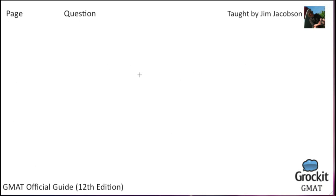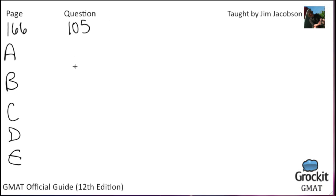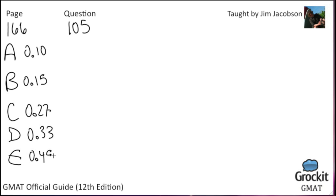On to question number 105, the last one on page 166. Answer choices are 0.10, 0.15, 0.27, 0.33, and 0.45. With decimals that close together, we're going to have to do some calculation. 60% of the members of a study group are women, and 45% of those women are lawyers. If one member is selected at random, what is the probability that the member selected is a woman lawyer?